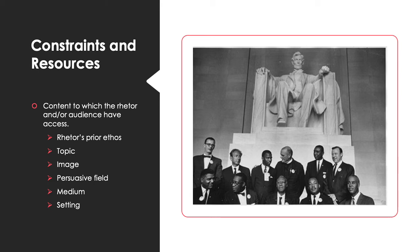Next, we look at constraints and resources. This is any content — highlight that, put a star by your notes — any content to which the rhetor and/or the audience have access. The rhetor's prior ethos, the topic on which the rhetor speaks, the image of the rhetor, the persuasive field — that is all of the other messages that exist in the world — the medium of transmission, the setting of the rhetorical act: all of those are constraints and resources that function in rhetorical situations.